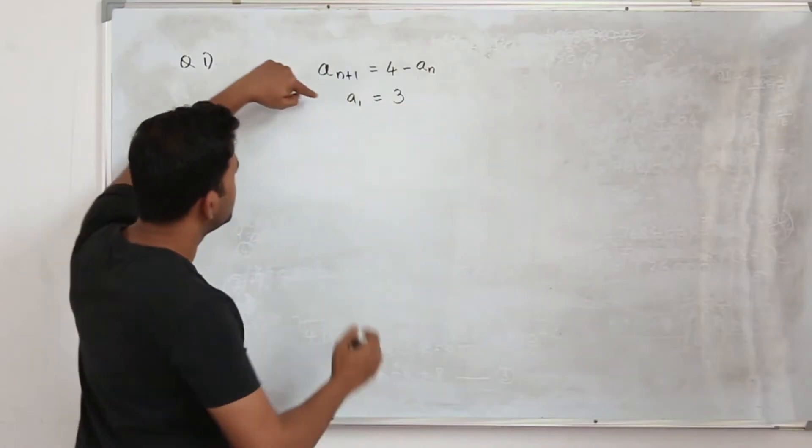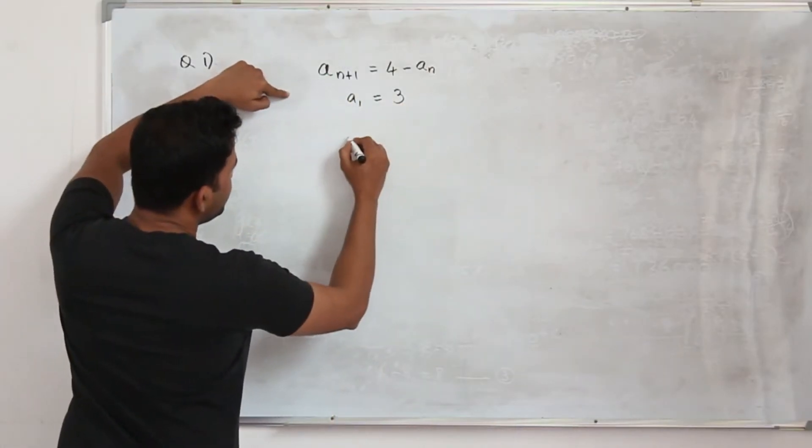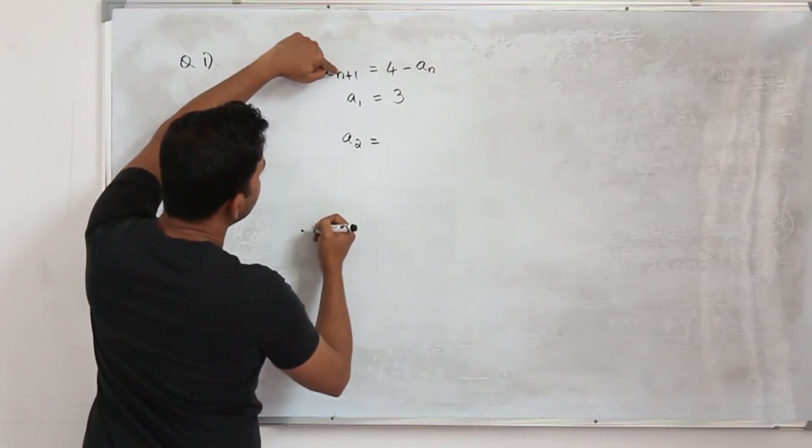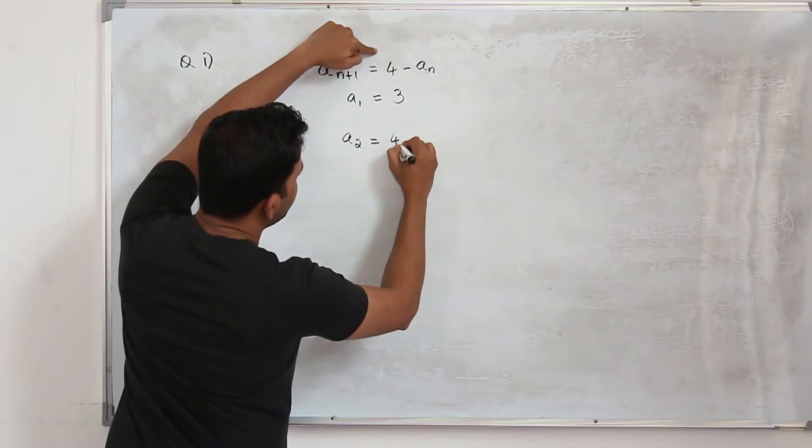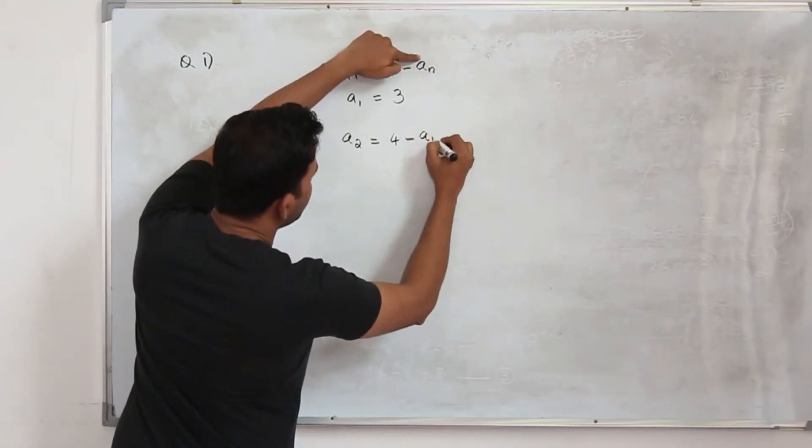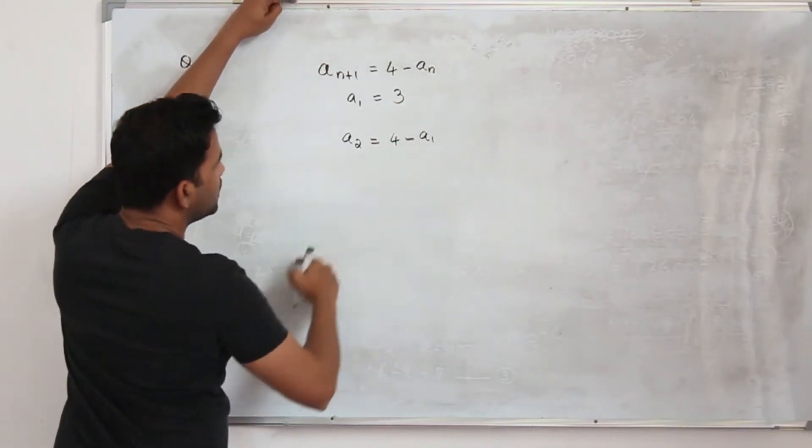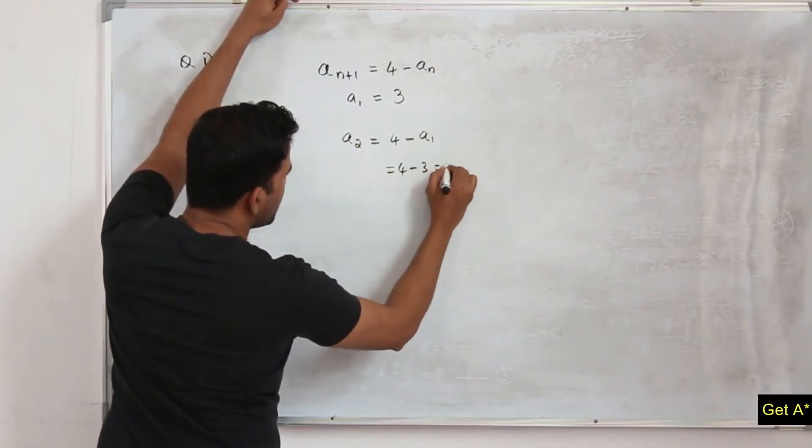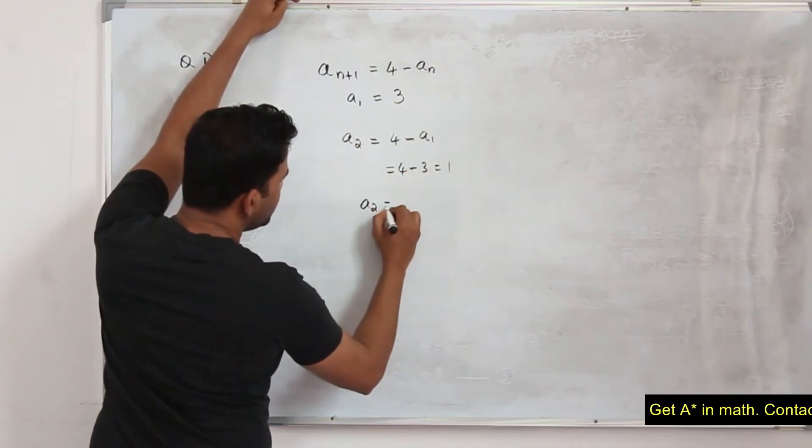You are given this, you need to find the value of a₂ first. a₂, you replace n by 1 here, so 1 plus 1 is 2. a₂ will be 4 minus a₁ because we replace n by 1. a₁ is 3, substitute here: 4 minus 3 is equal to 1, so your a₂ is 1.